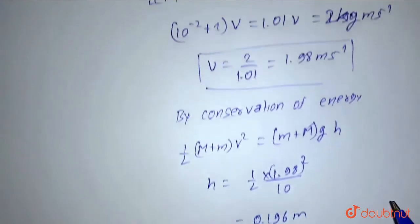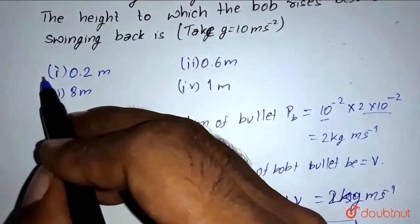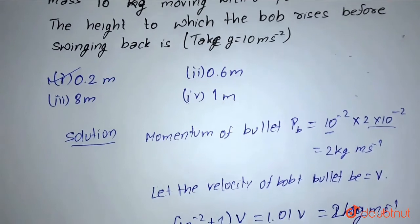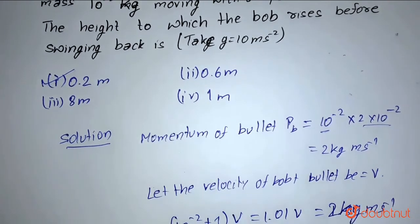So the correct option is option number 1. The highest point will be 0.2 meters. The bob will rise up to 0.2 meters. Thank you.